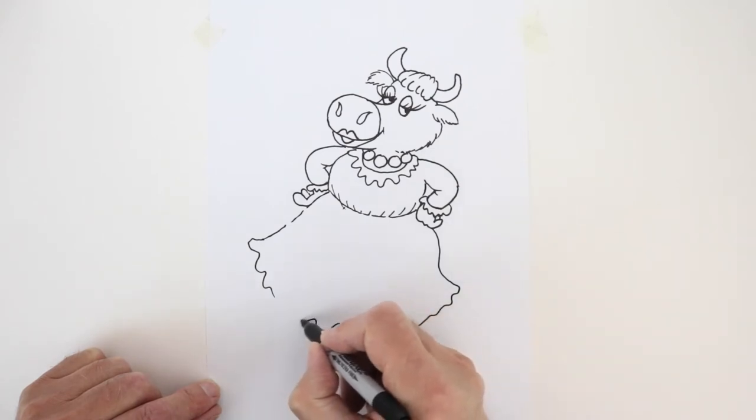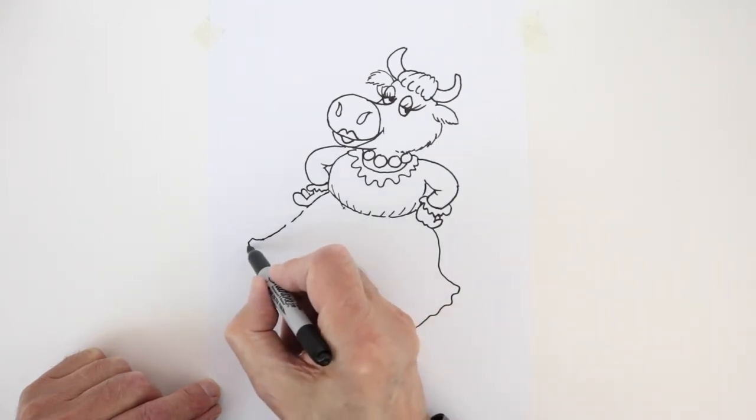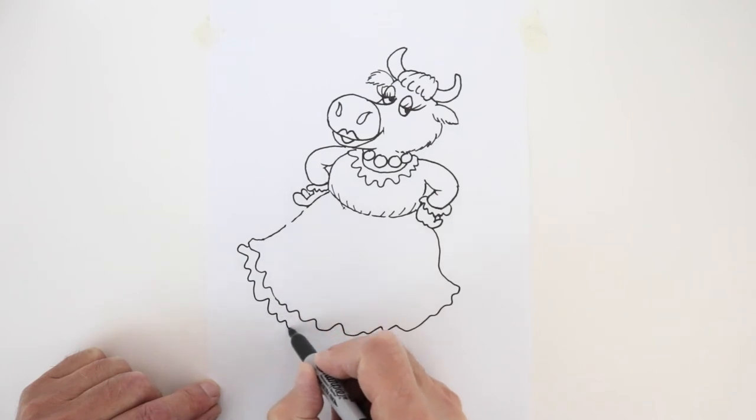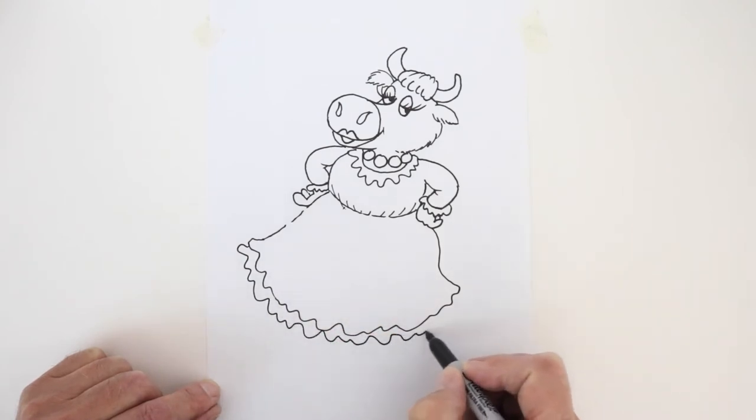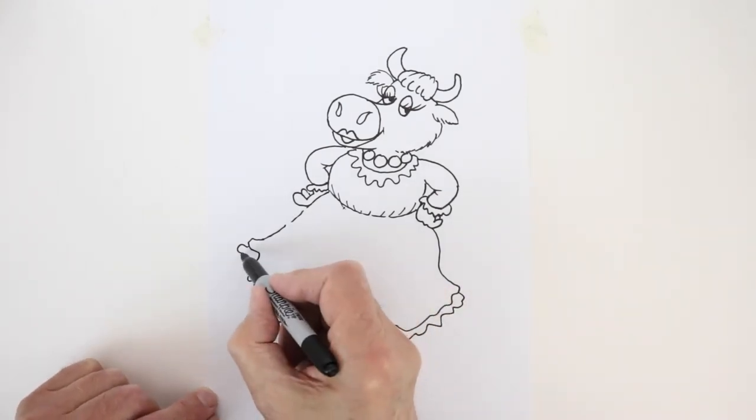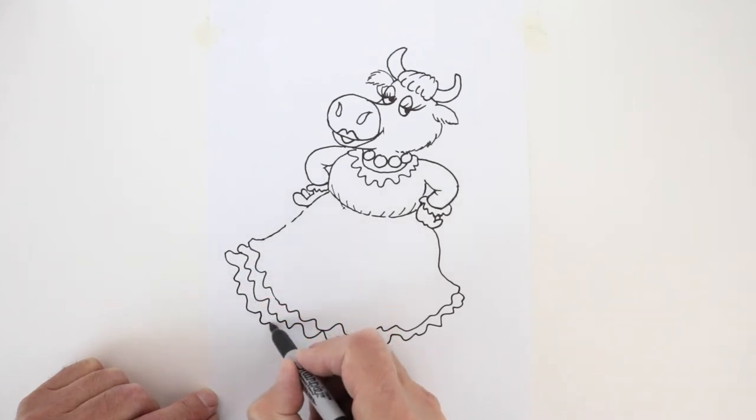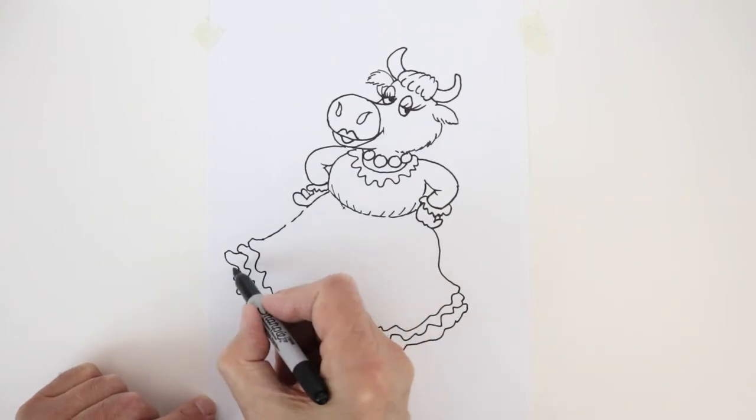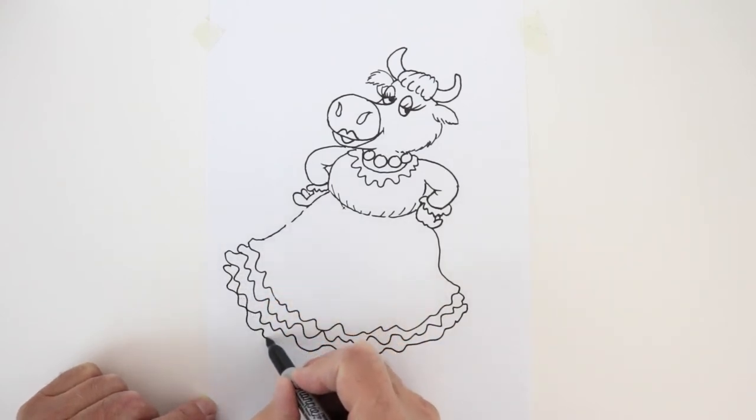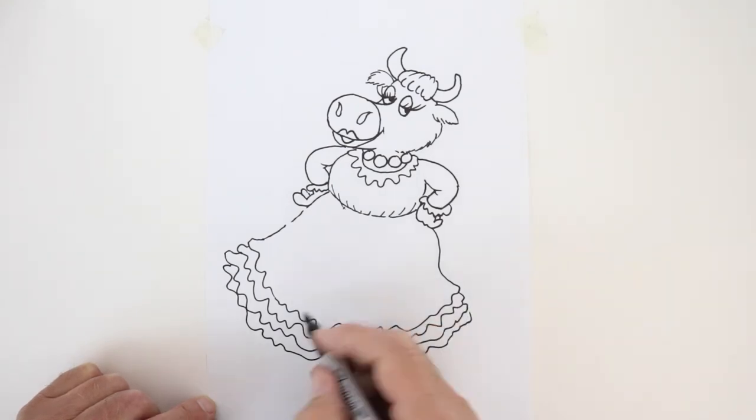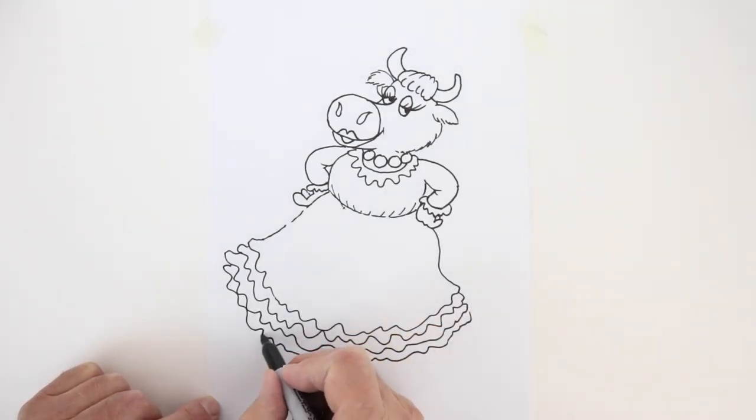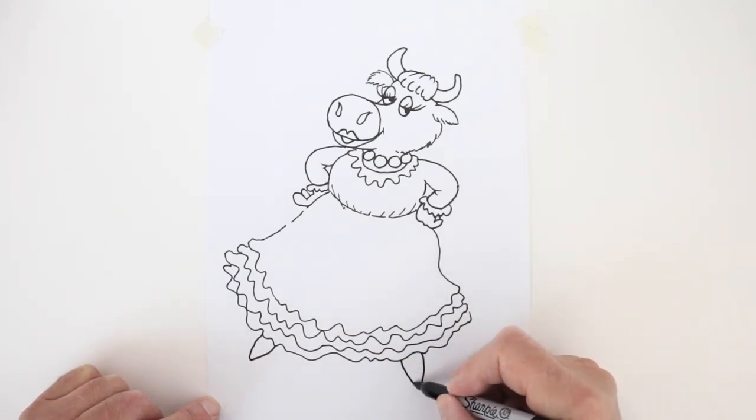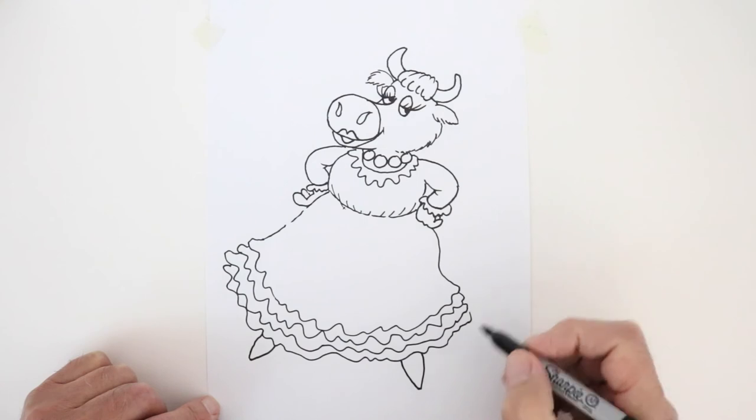Lots of nice curls and flounces coming down here, another one underneath, lots of petticoat showing, and another one here, and one last one there. And dainty little feet coming out here like that, and another one, all ready for the dance.